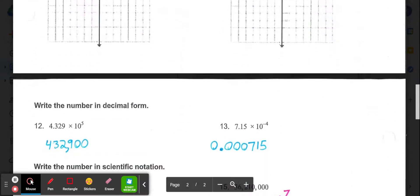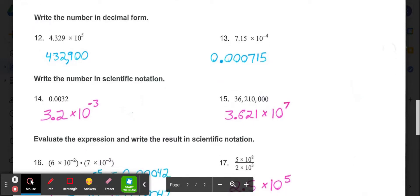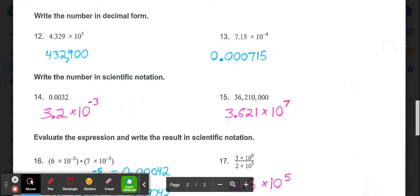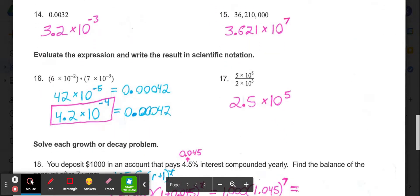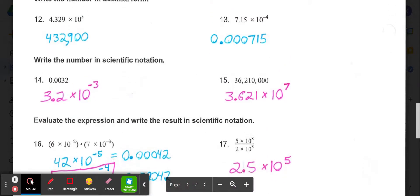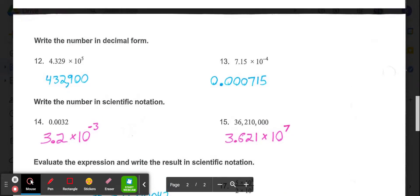Now moving to the back page, numbers 12, 13, 14, 15, 16, 17 all have to deal with scientific notation. So in 12 and 13, we're taking scientific notation, writing it in decimal form.